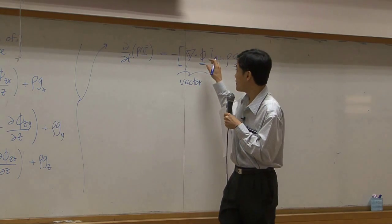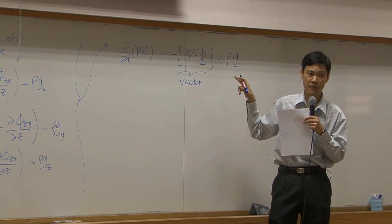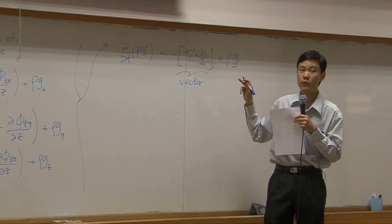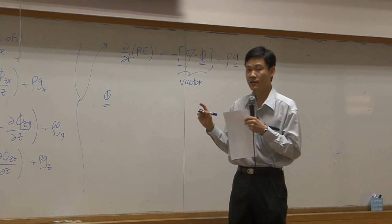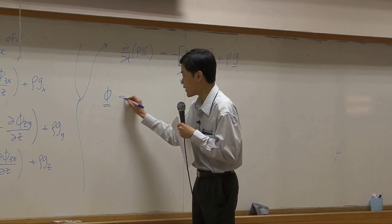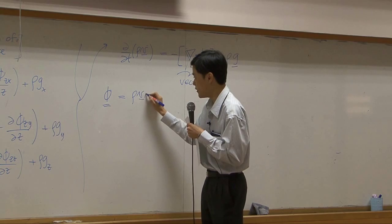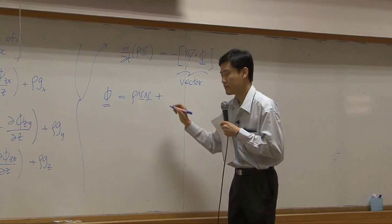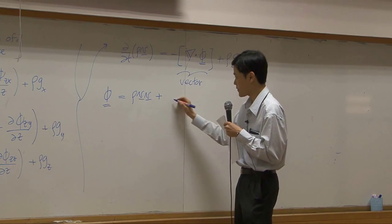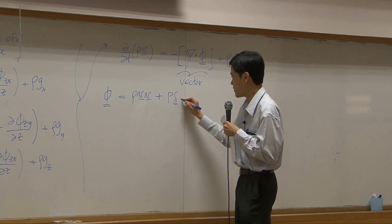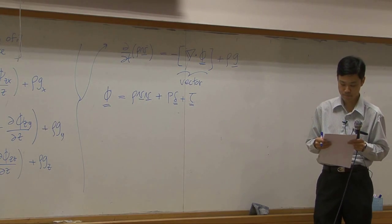Now, but this term, phi term is not what we normally prefer. We would prefer something that can be related to velocity. So we're going to say that phi itself is the combined flux. Combined flux is consisting of the convective flux rho VV and molecular flux. Molecular flux is represented by two terms: pressure term and shear stress term tau.